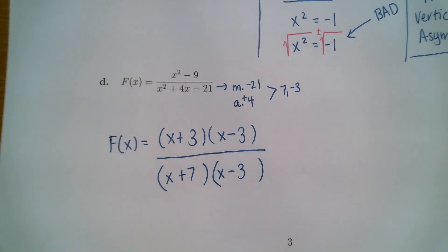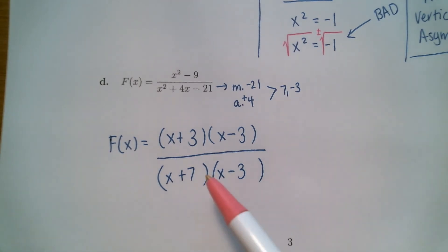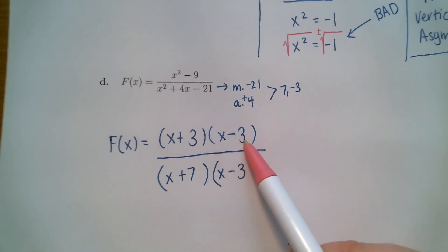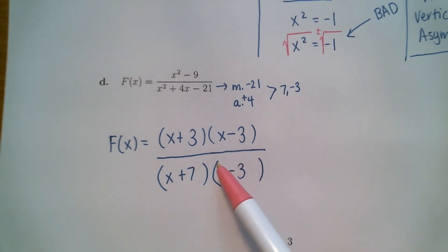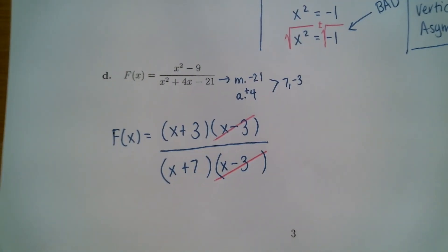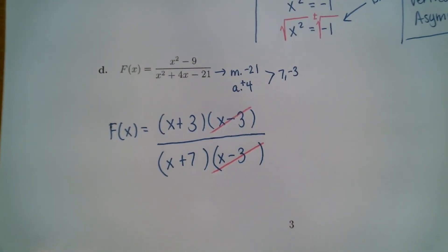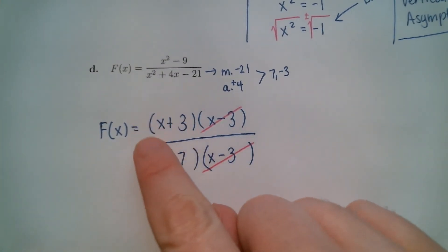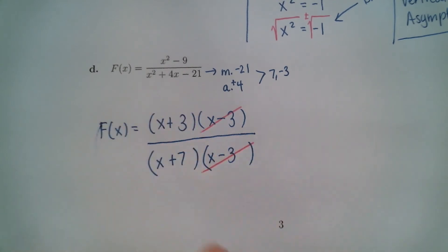So we factored the top and we factored the bottom. Now we need to check to see if something cancels. I see an x minus 3 in the top and an x minus 3 in the bottom — those cancel. Going forward, we are going to use this reduced form of our rational function.